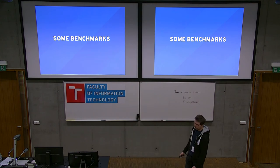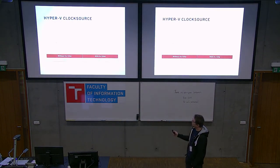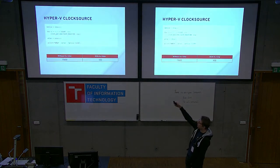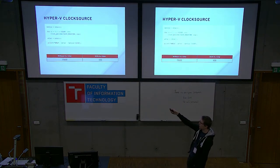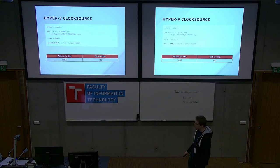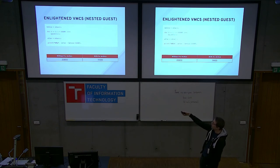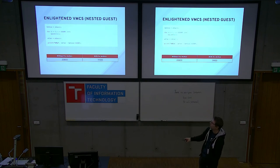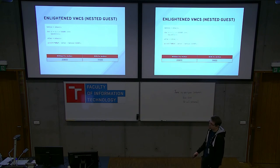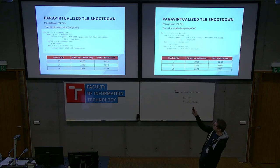Here are a few benchmarks showing how important these features are. For clock source: a simple cycle-reading clock running on Windows takes 17,000 cycles without HV time, and just 400 cycles with HV time — a tremendous improvement. For enlightened VMCS, which is a nested guest improvement: running CPUID in a loop in a nested guest takes about 21,000 cycles without the feature and 19,500 with it — roughly a 10% improvement, which can be significant for some workloads.